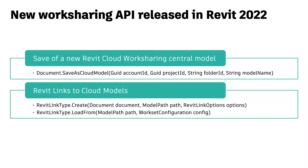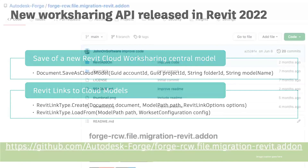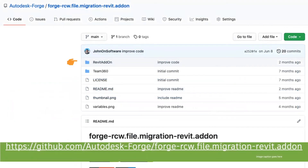Based on these two new APIs, I enhanced the Revit SDK sample to migrate Revit Cloud Worksharing Central model from BIM360 Team to BIM360 Docs. The tool is an open source project. You can go to the website, download the source code, and customize the function based on your requirements. Let's watch a video to understand how the tool works.